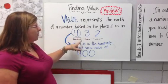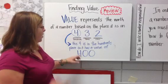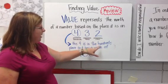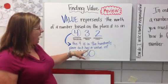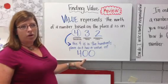So if we look at this number 432, which is a very basic number, we can see that the 4 is in the hundreds place so it has a value of 400. Four times 100 is 400.